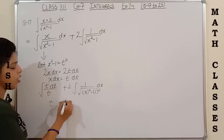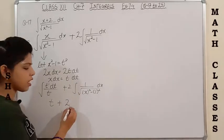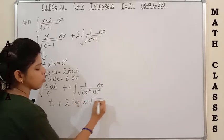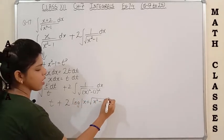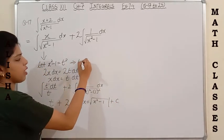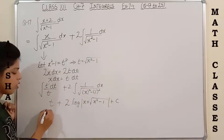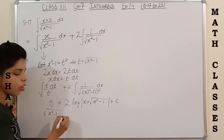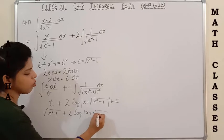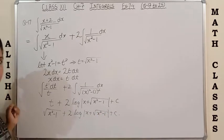t cancels with t and we get 1. The integration of 1 with respect to t is t. This is actually the integral of the form ∫√(x²-a²), which equals log(x + √(x²-a²)) + C. Putting back t = √(x²-1), the final answer is √(x²-1) + 2 log|x + √(x²-1)| + C. Please note down.